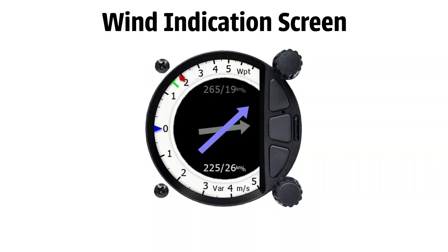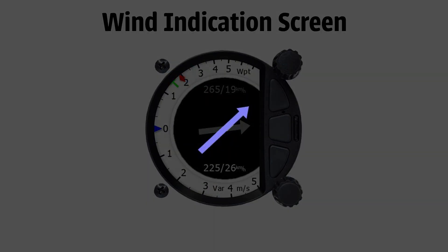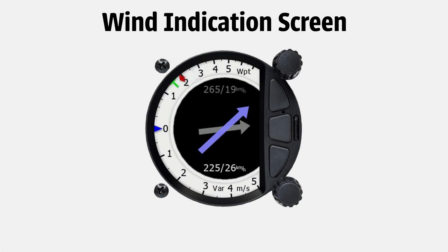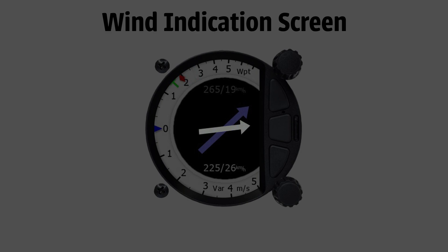Hawk also shows you a wind indication screen that shows you two wind readings. The real-time wind direction can be seen on the blue arrow, while the wind average can be seen on the white arrow.